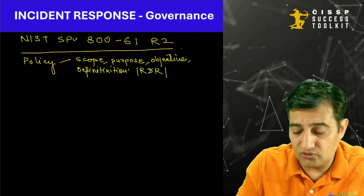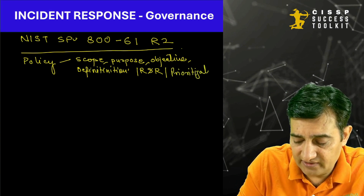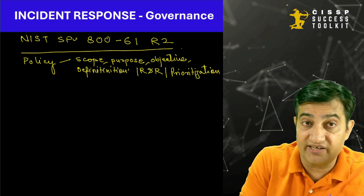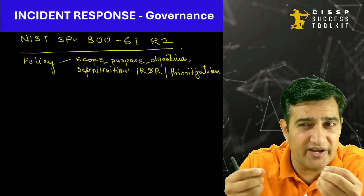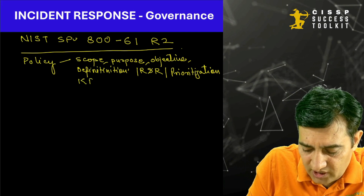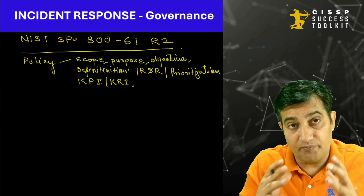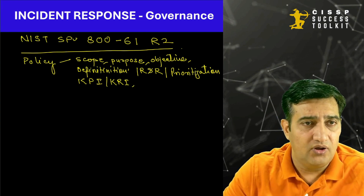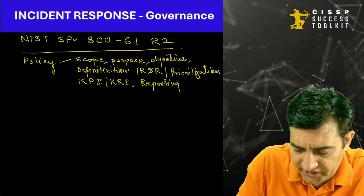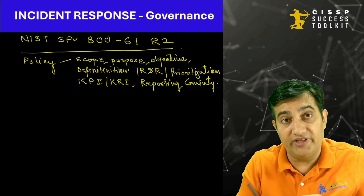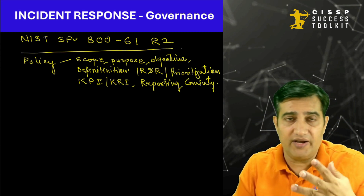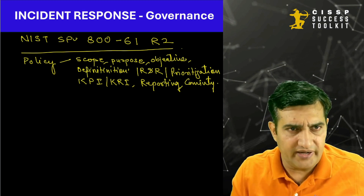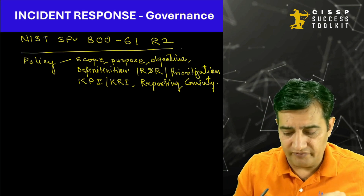The incident response policy should also talk about prioritization, because all incidents happening in a company are not equal — they may have different levels of impact. So you need to give some kind of prioritization. Your policy should also capture KPI and KRI so that you are able to understand the performance of the entire incident response plan, and these should be automated as well. It should also define how reporting and communication will happen, because in case of an incident, you sometimes have to communicate within your company and sometimes outside — to media, law enforcement, other incident response teams. Your policy should be a holistic policy answering all these questions.